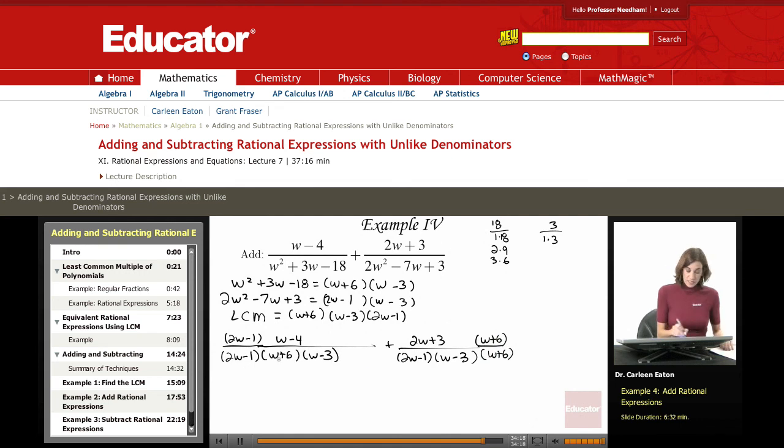Now I need to do some simplification of these numerators and then add. So 2W minus 1 times W minus 4. That's 2W times W is 2W squared. Outer term, that is going to be negative 8W. Inner, negative W. Last, negative 1 times negative 4 is plus 4.